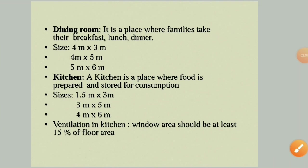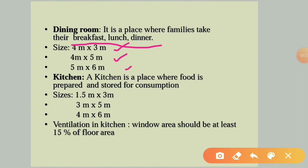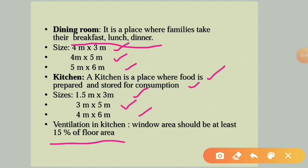The dining room, where families take breakfast, lunch, and dinner, is typically 4×3, 4×5, or 5×6 meters. The kitchen, where food is prepared and stored, requires good lighting and ventilation. Common kitchen dimensions are 1.5m×3m, 3m×5m, or 4m×6m. Ventilation in the kitchen area should be at least 15 percent of the floor area for proper ventilation and lighting.